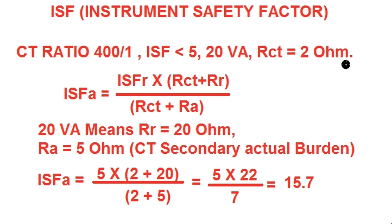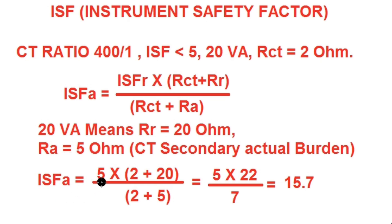CT secondary resistance RCT = 2 Ω. ISF is provided as less than 5 at rated burden of 20 VA, so RR = 20 Ω. Let us assume the actual burden connected on the CT secondary side is RA = 5 Ω. So actual ISF = 5 × (RCT + RR) / (RCT + RA) = 5 × (2 + 20) / (2 + 5) = 5 × 22 / 7 = 15.7.